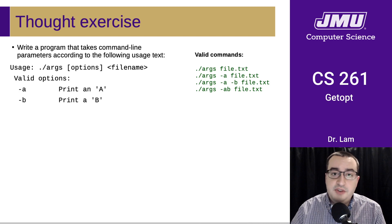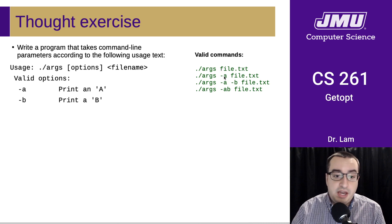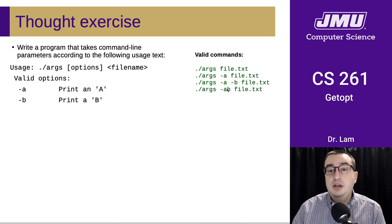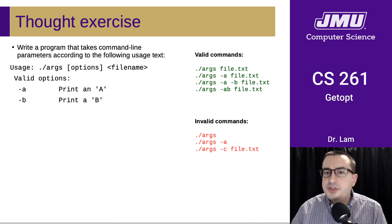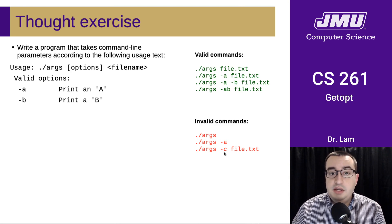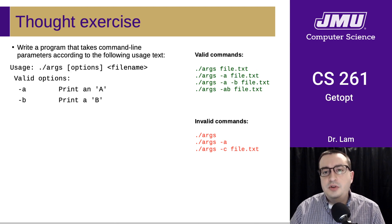Here are some valid commands — all of them include a file. One doesn't include any flags, one has one flag, one has two flags, and one has two flags together in one option, which is generally considered valid. Here are some invalid commands: the first doesn't include a file name, the second also doesn't include a file name, and one includes a flag that's not valid.